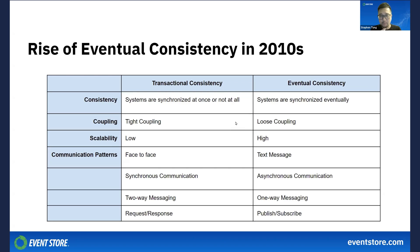When it comes to coupling, transactionally consistent systems tend to be more tightly coupled because they are centralized and require all systems to immediately reflect changes, making them highly interdependent. On the flip side, eventual consistency generally leads to systems that are more loosely coupled, because systems are allowed to update at their own pace, fostering more independence and resulting in looser coupling. This makes eventual consistency a much easier approach to scale.